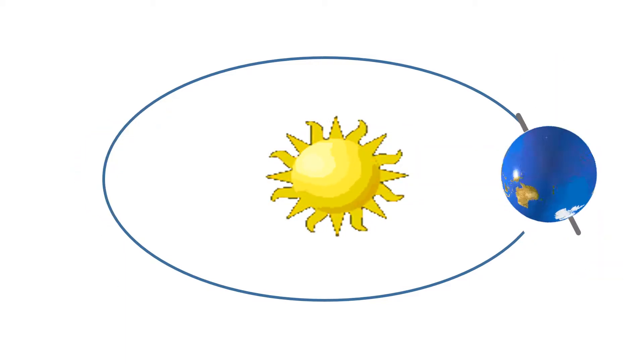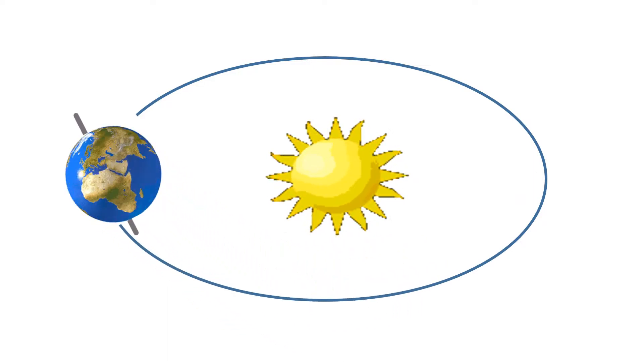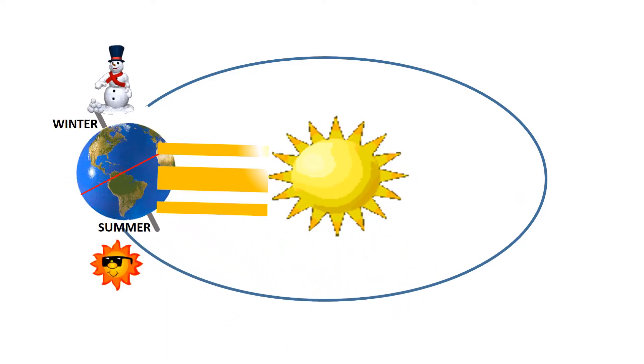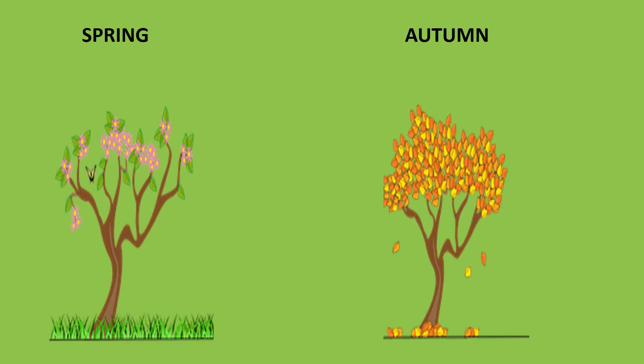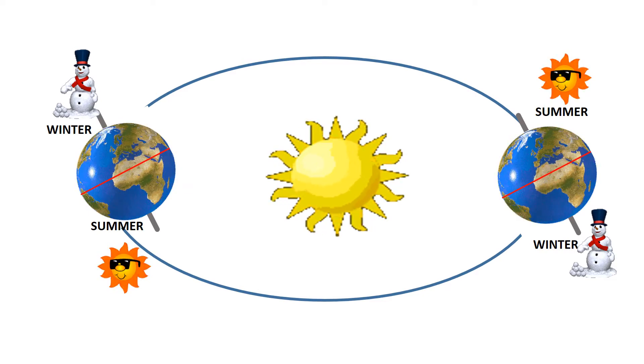Winter. As the year progresses the Earth's tilt changes. Think when spring and autumn occurs. Autumn and spring take place between summer and winter.